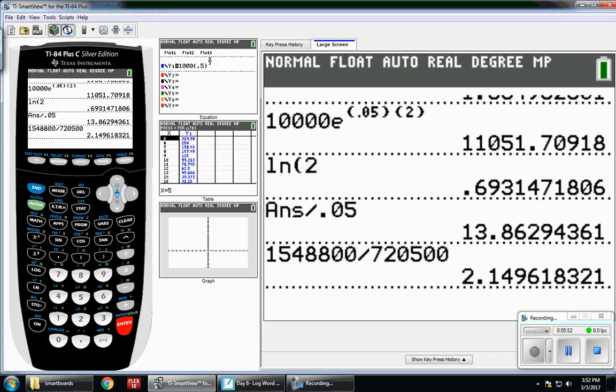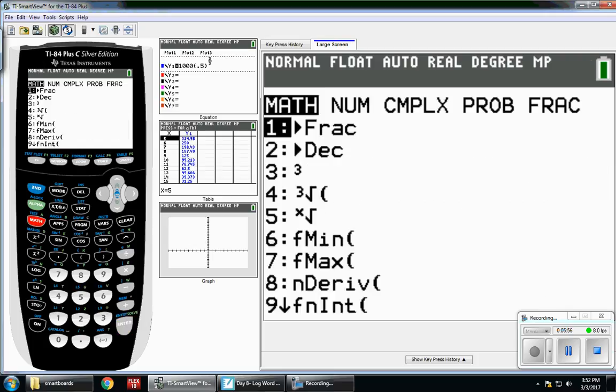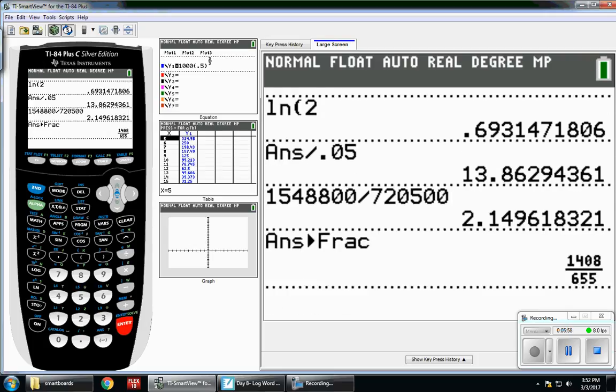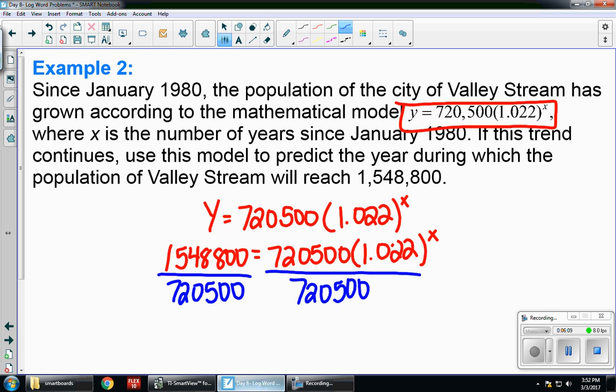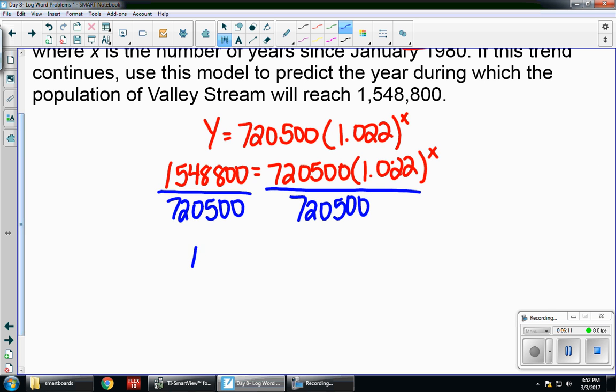Now, you can keep that really long decimal if you want. You can always try to hit math, enter, enter to see if it'll give it back to you as a fraction. In this case, it does. So it's just a little bit easier to work with. I have 1408 divided by 655. So 1408 divided by 655 is equal to 1.022^x.